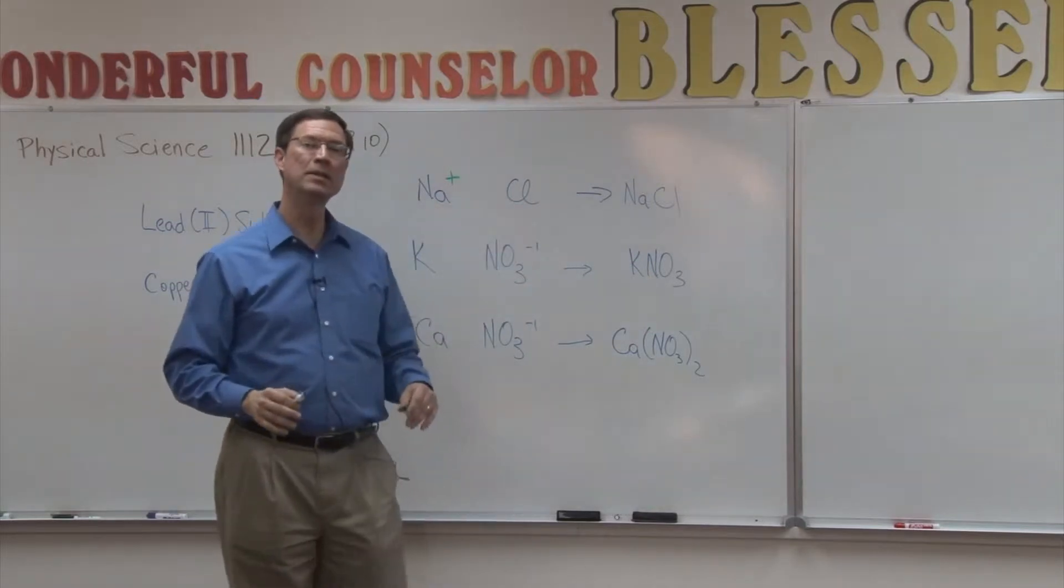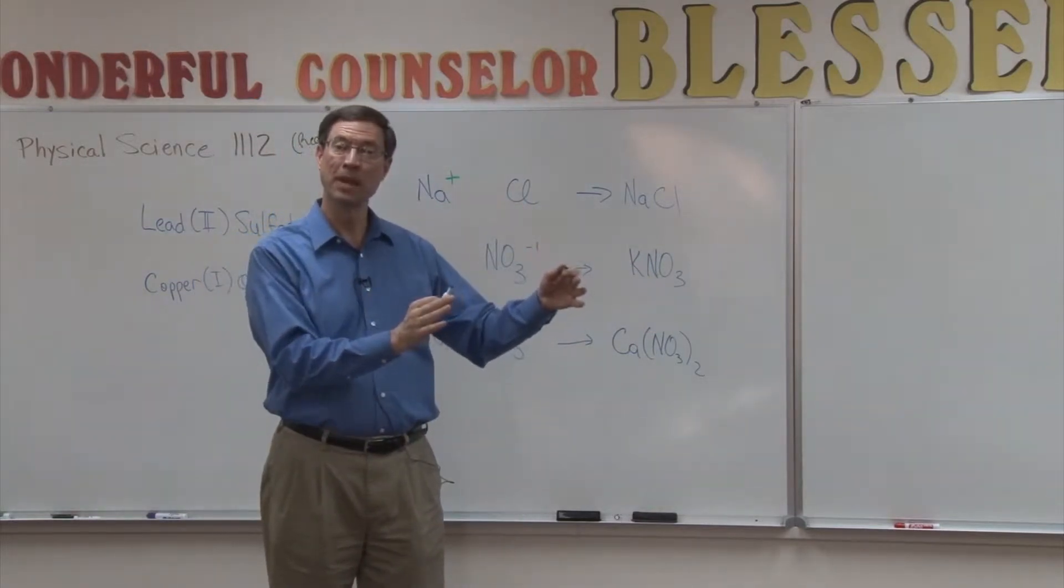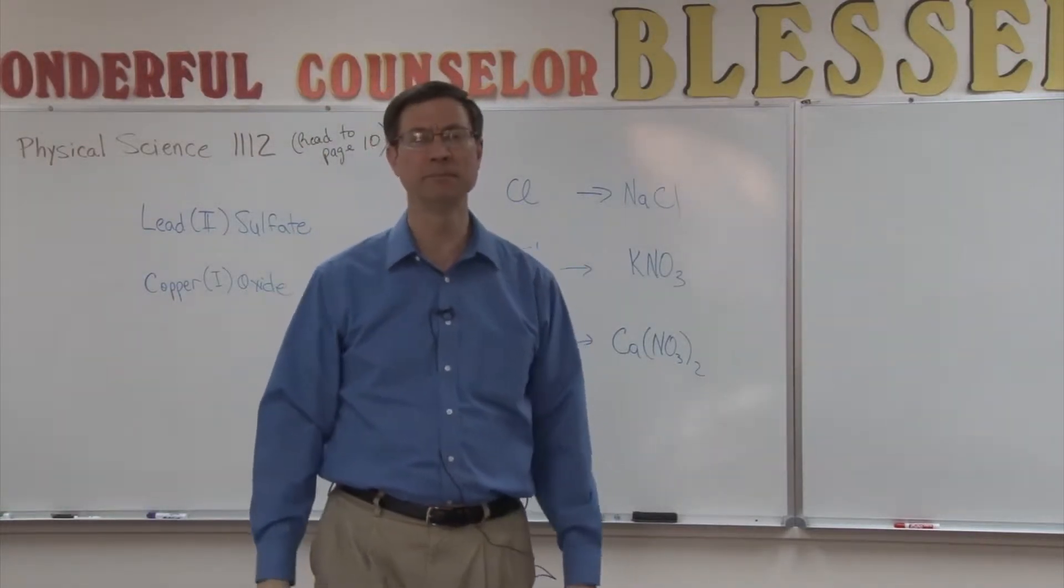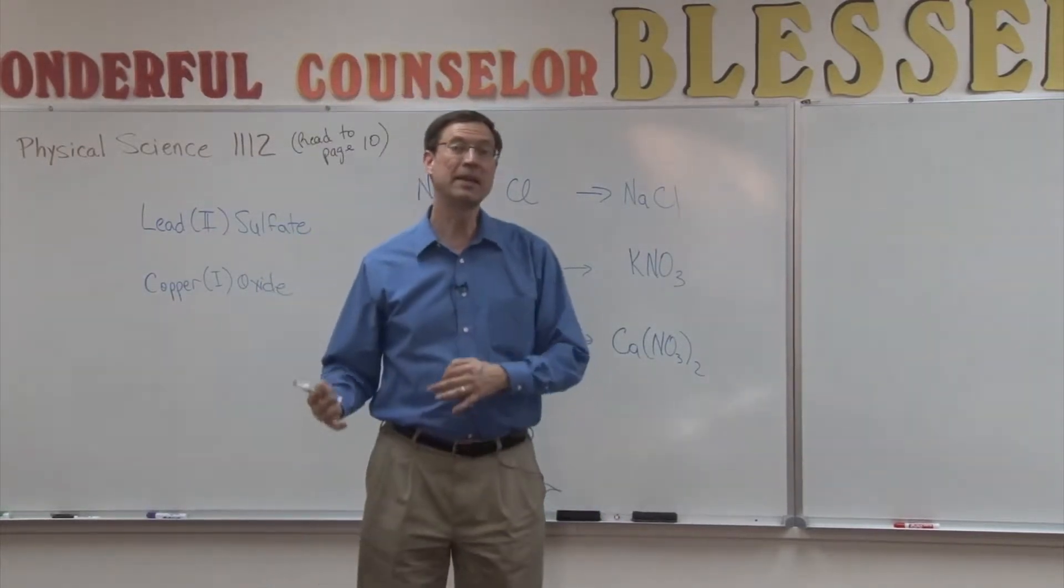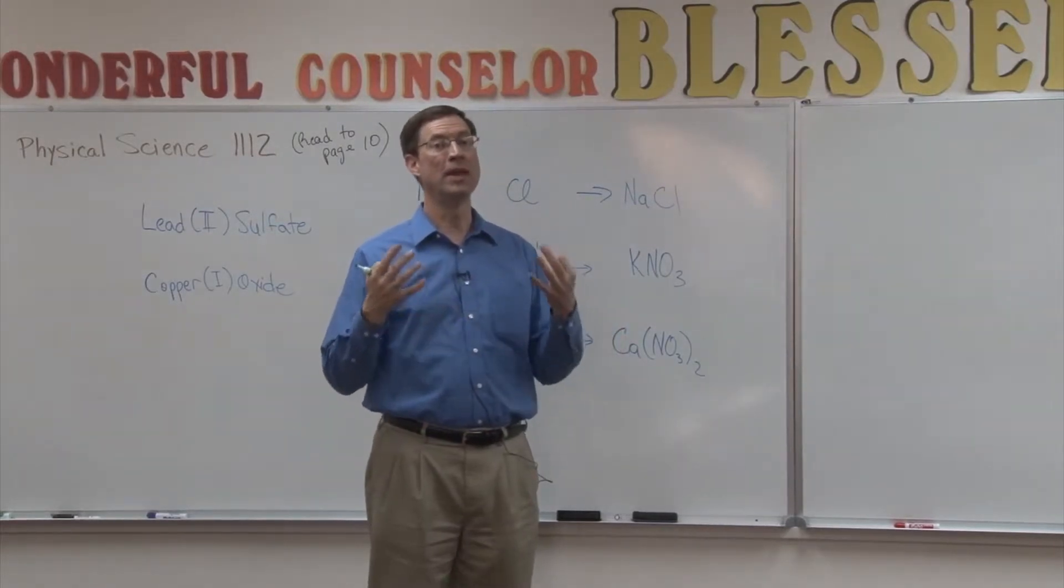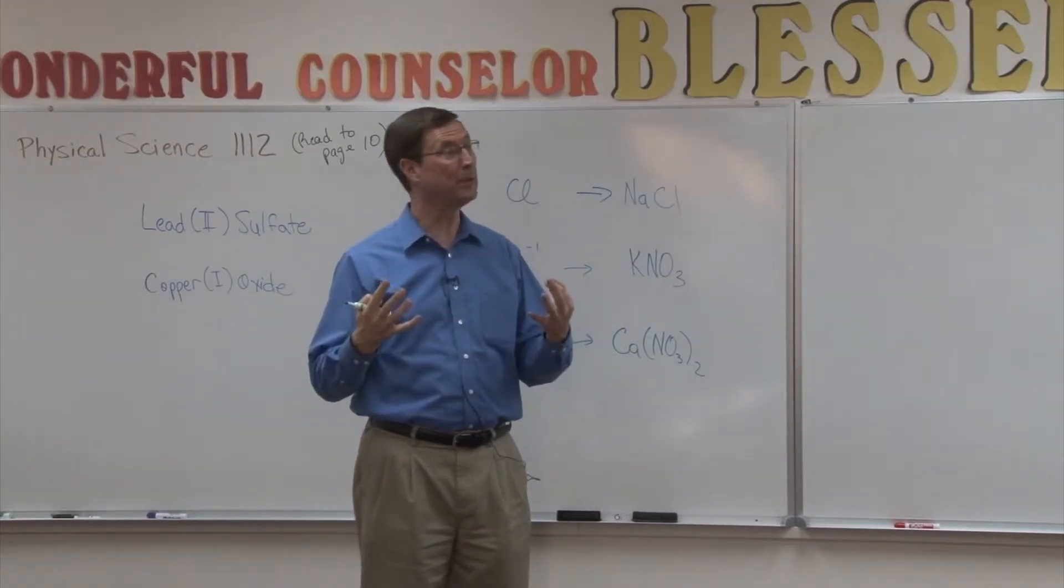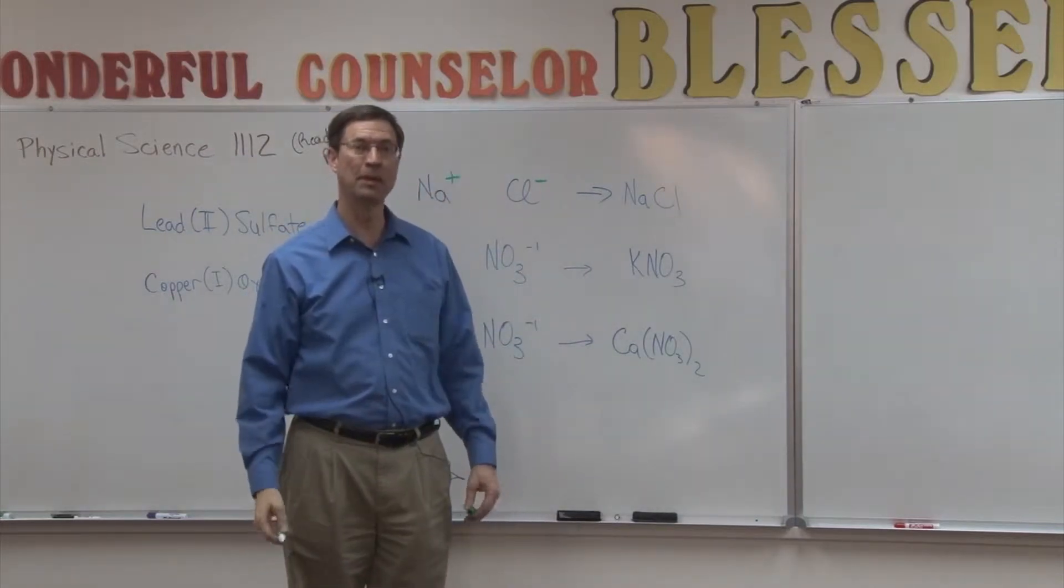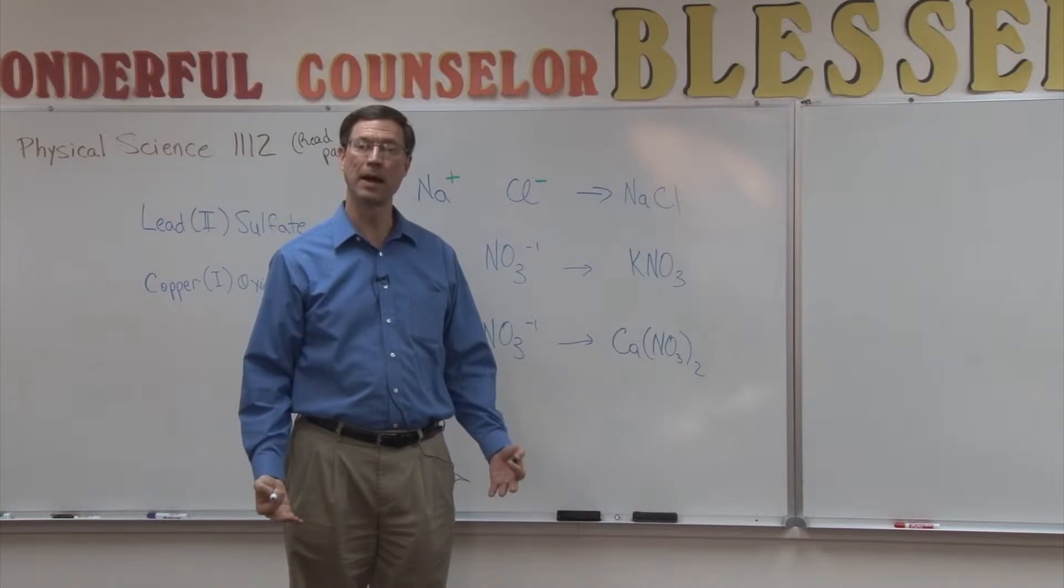Chlorine is in family seven. It only needs one electron. It is element number 17. And if it gains one electron, then chlorine is really happy. And so chlorine tends to take on a negative charge and become a negative ion.